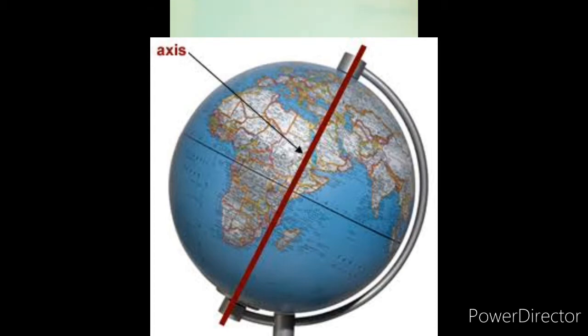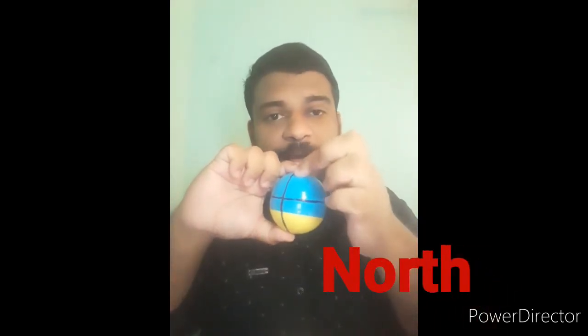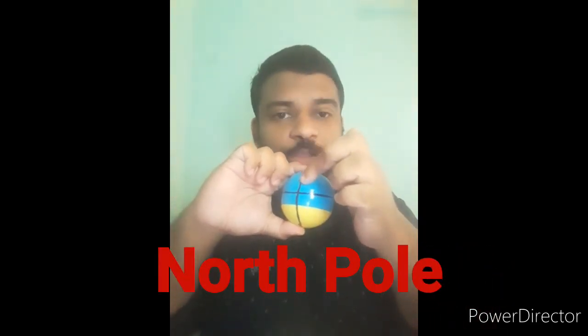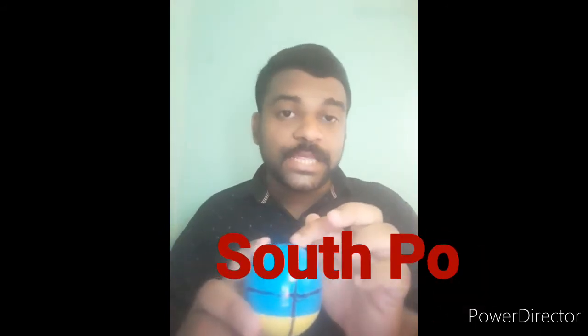You should understand that an axis is an imaginary line. This axis passes through the upper part and also the down part. The needle passes through the upper part and the down part. The upper part is known as the North Pole and the lower part is the South Pole. So, the axis passes through two poles: North Pole and South Pole.